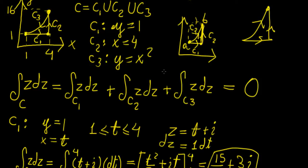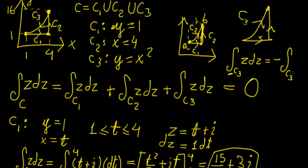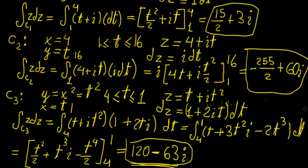Independence of path tells us that c3 should be equivalent to c1 and c2 combined. If we invert the direction of curve c3, the result becomes negative. Had we integrated from 1 to 4 instead of 4 to 1, we would have gotten 120 + 63i, and adding all values together gives exactly the same total — demonstrating this key property.